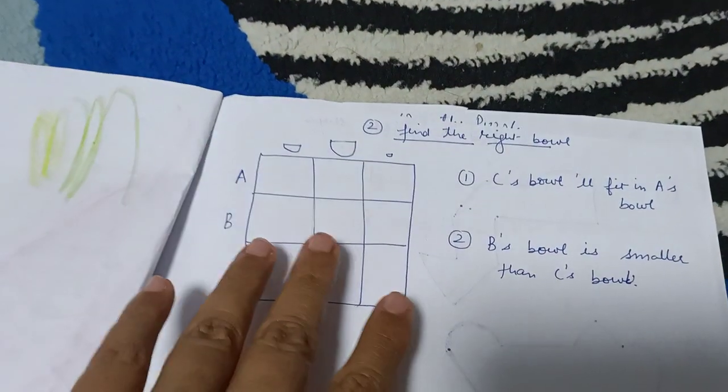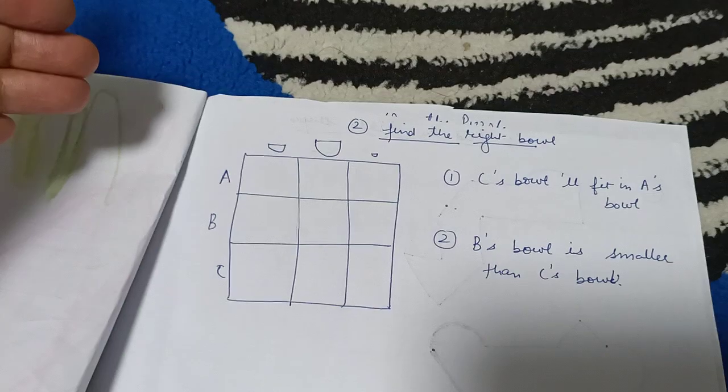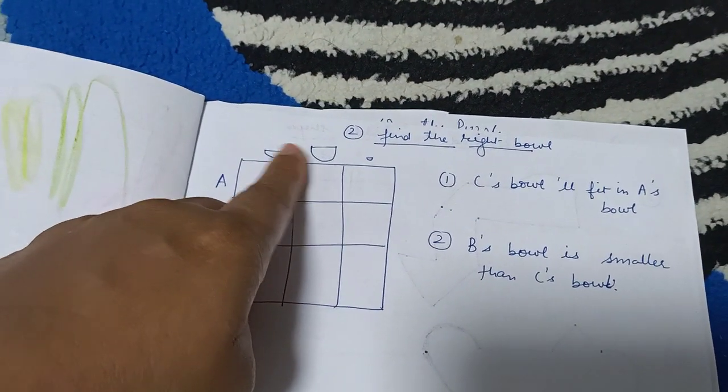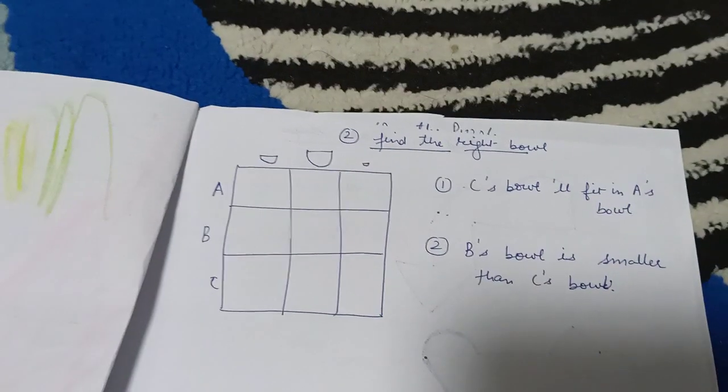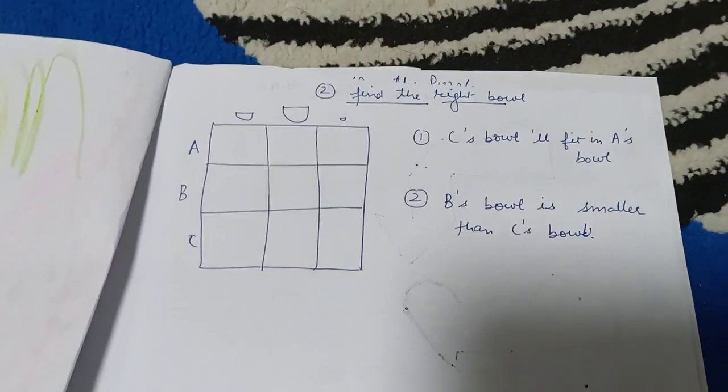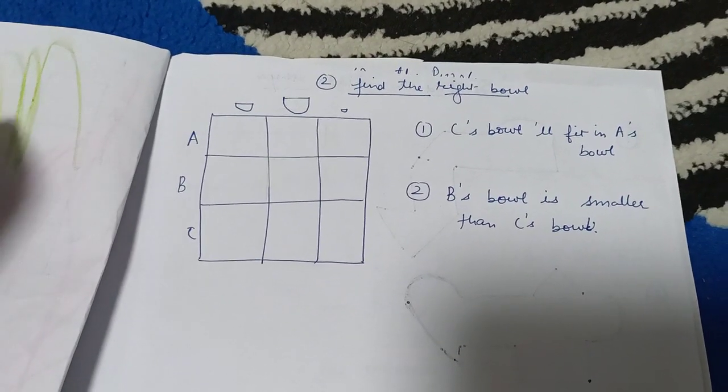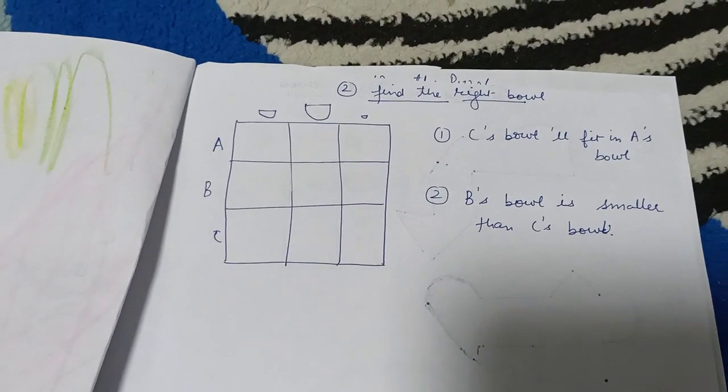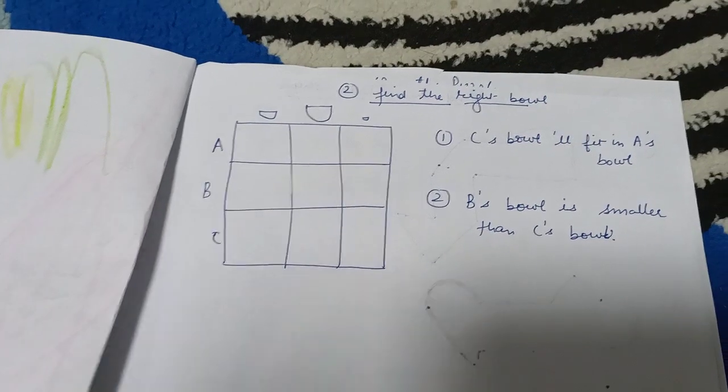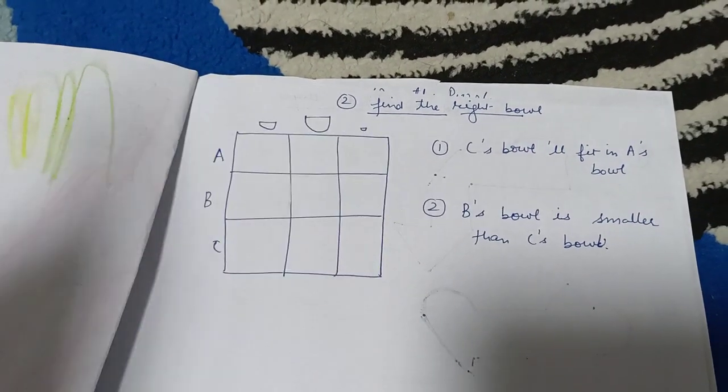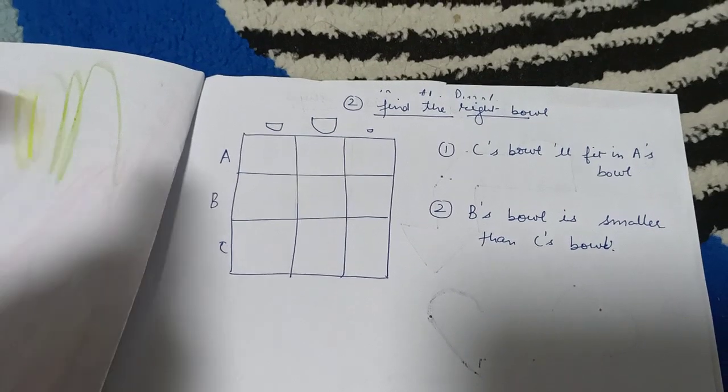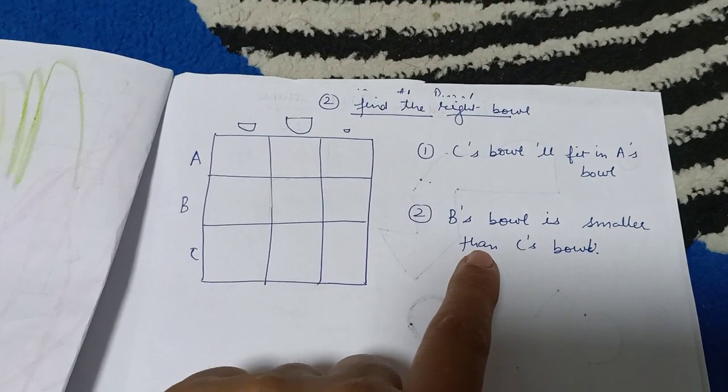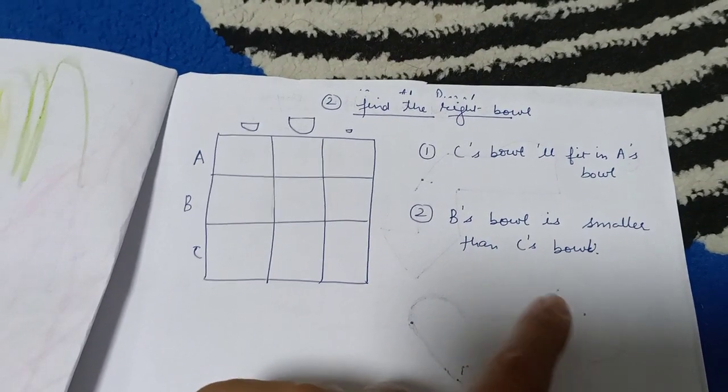Second critical question is again a similar one. You have to find the right bowl. There's a smaller bowl, a big bowl, and a medium-sized bowl. There are again three people: A, B, and C. What is the clue? C's bowl will fit into A's bowl. It means the bowl of C is smaller than the bowl of A, because that's why it fits into bowl of A. And B's bowl is smaller than C's bowl. So B is smaller than C, and C is smaller than A.